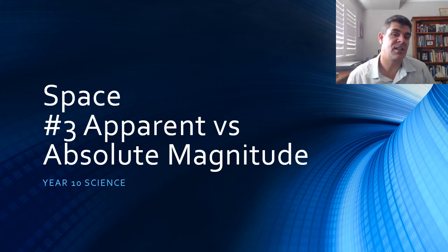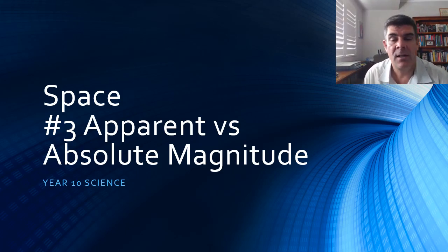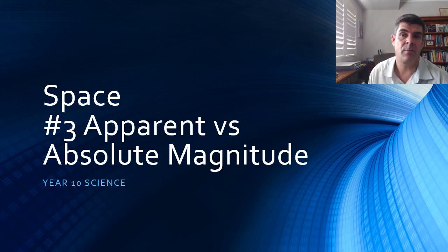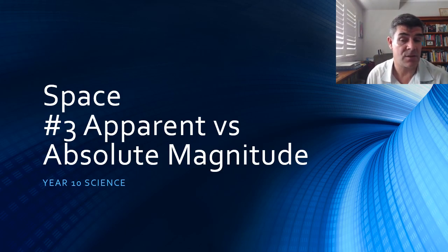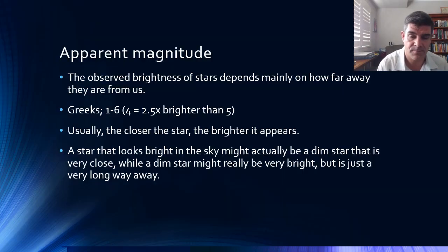Hi students, welcome to your Year 10 science space topic. This is video number 3, and now we're going to look at one of the important characteristics or measures of stars, which is apparent versus absolute magnitude.